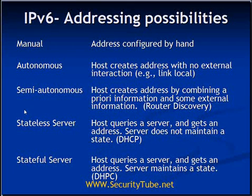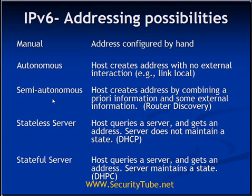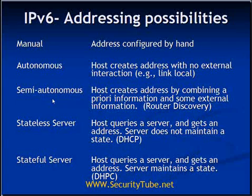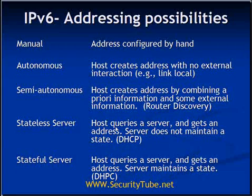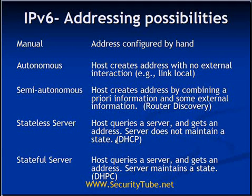A remaining question about autonomous and semi-autonomous addresses is: okay, I got the IP address automatically — but what about the gateway IP address, DNS prefix, DNS IP address, and other information? IPv6 has handled this by inserting a flag in the router discovery message. If the router discovery has a specific flag set, the host will perform a DHCP server query and from that DHCP server it will get other information such as gateway IP address, DNS suffix, and so on.